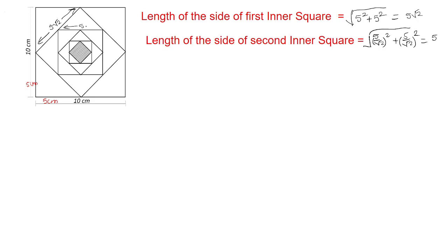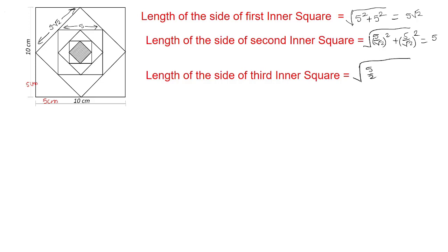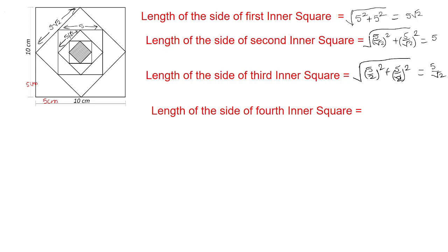Now, the length of the third inner square is √((5/2)² + (5/2)²), which equals 5/√2. The length of the third inner square's side is 5/√2.